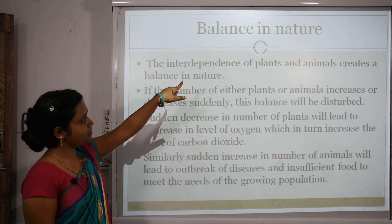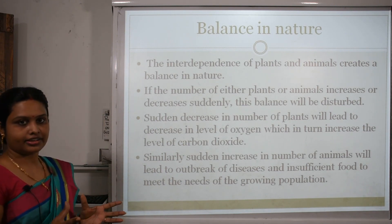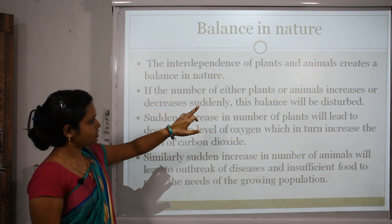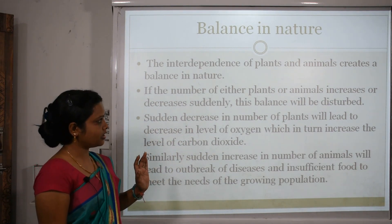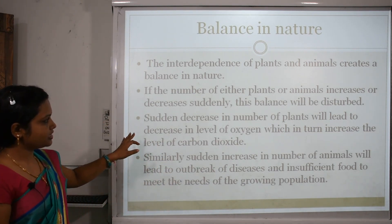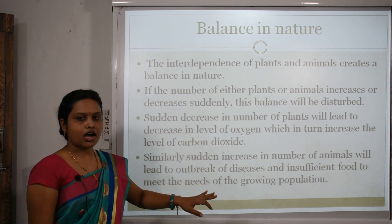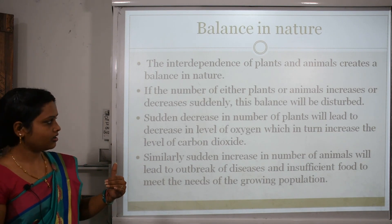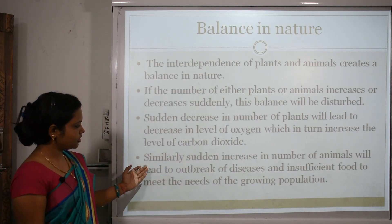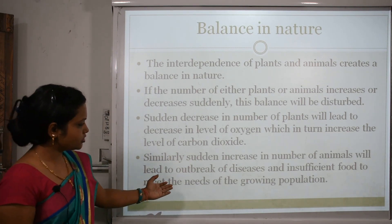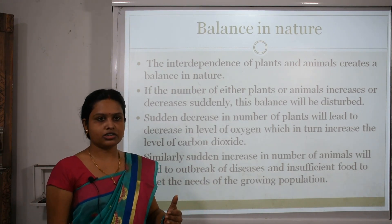Balance in nature: the interdependence of plants and animals creates a balance in nature. If the number of plants or animals increases or decreases suddenly, this balance will be disturbed. A sudden decrease in the number of plants will lead to a decrease in the level of oxygen and an increase in the level of carbon dioxide. Similarly, a sudden increase in the number of animals will lead to an outbreak of disease and insufficient food to meet the needs of the growing population.